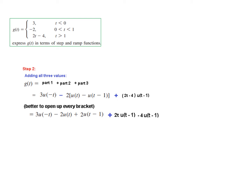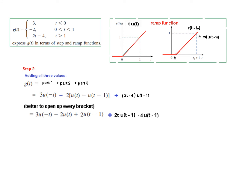A very important point: we can convert any function that is multiplying by t into a ramp function. Only terms multiplied by t can be converted into a ramp. Recall the ramp function r(t), which equals t·u(t) — it is 0 before t=0 and has a slope of 1 after t=0.